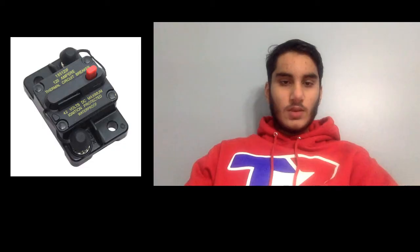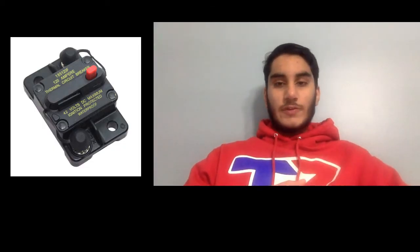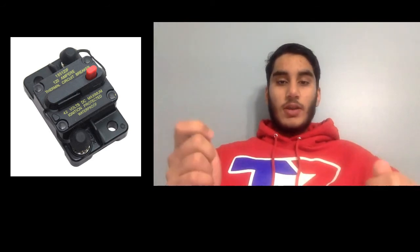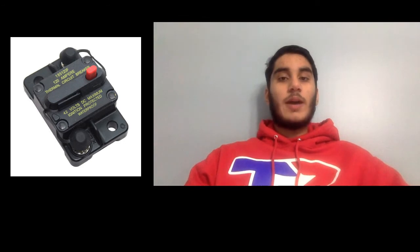The battery that our team uses to power our electrical components is a 12-volt lead-acid battery that is also used on motorcycles. The main breaker is like an on and off switch for the whole robot. It is connected to the PDP and the battery so it can directly stop the power coming from the battery.